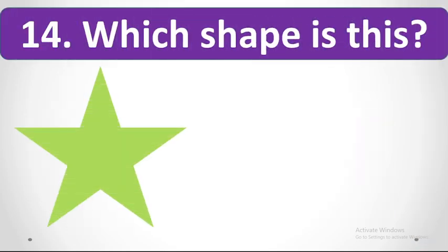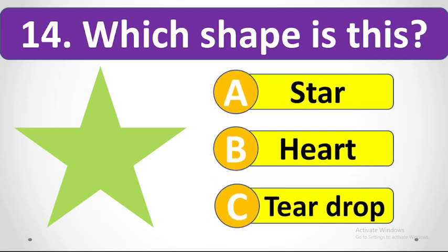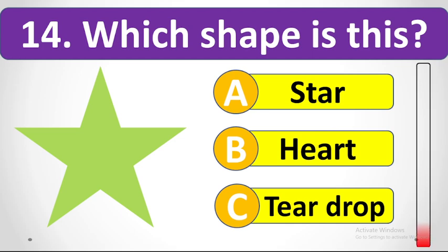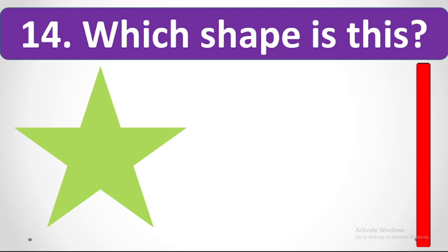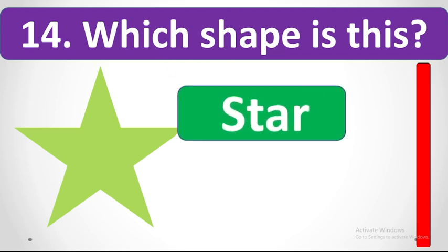It's octagon. Which shape is this? Your options are star, heart, or teardrop. Your time starts now. It's a semicircle.